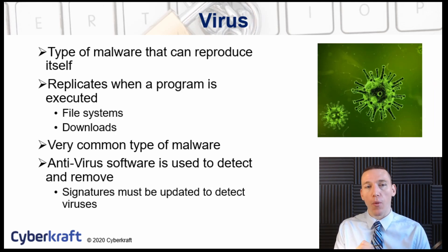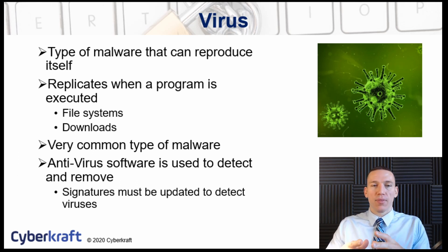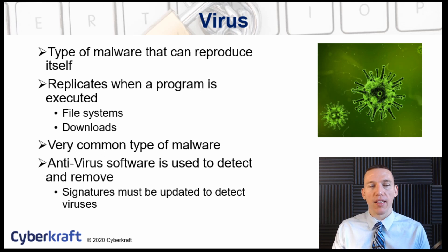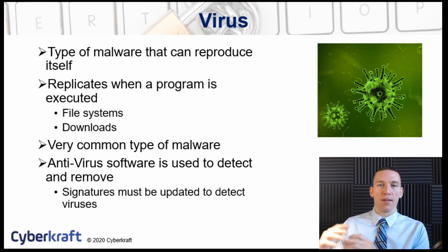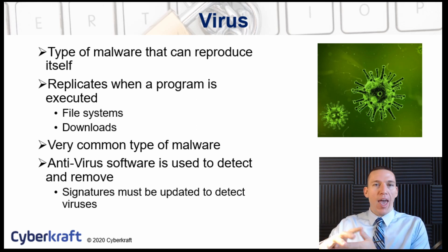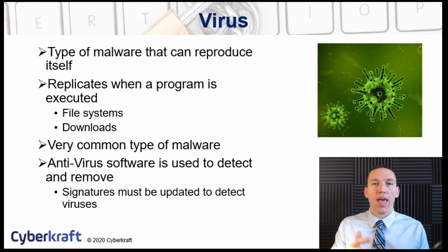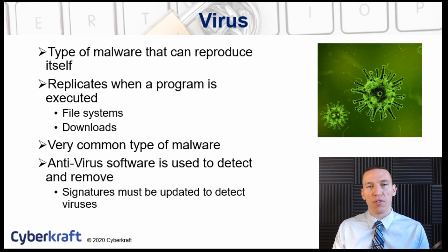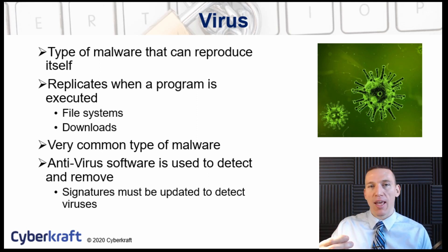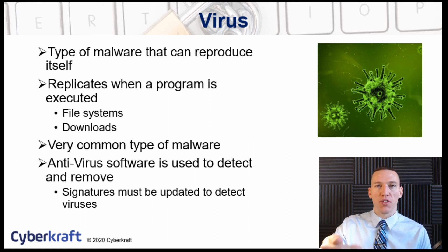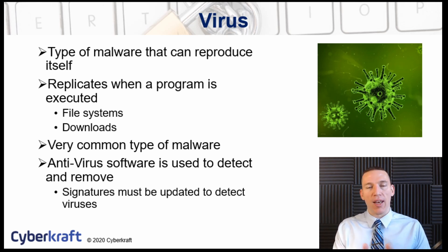A virus is a type of malware that can reproduce itself — it can create another copy of itself, and viruses will replicate when a program is executed. A Trojan horse is a type of malware that acts as a legitimate piece of software. You would download what you thought was a legitimate file, execute it, and that file might do what it said it would do, but it would also include a virus that infects your device. Viruses can also replicate when you click a download link — if you click a download link for a file, it might contain a virus and your device could be infected.